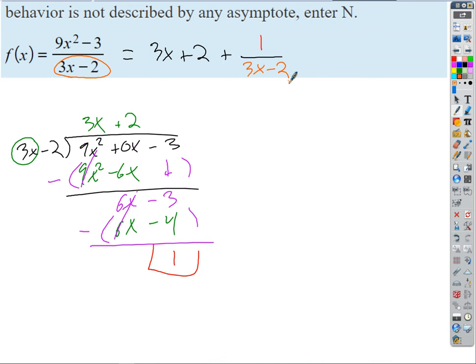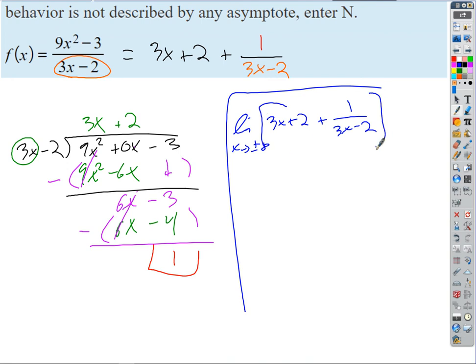So now we've simplified the quotient. If I were to take the limit now, I've got my f of x. So the limit of all this stuff, as x goes to plus or minus infinity, what's going to happen?